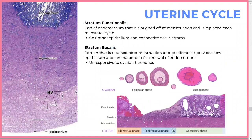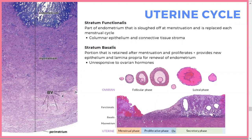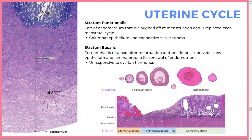The menstrual phase begins when the corpus luteum has degenerated and progesterone and estrogen are absent — the functional layer sheds. The proliferative phase follows: the uterus rebuilds, providing glycogen and nutrients with new arteries. Then ovulation happens and the secretory phase begins — the endometrium secretes everything it can to support the embryo. If no fertilization occurs, all of that is thrown away.